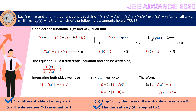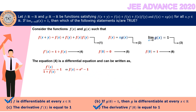We have derived f(x) = e^x - 1. Since f is differentiable everywhere, we differentiate to get f'(x) = e^x. Therefore f'(1) = e, not 1. So option C is incorrect.